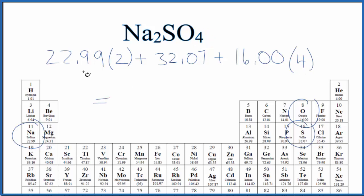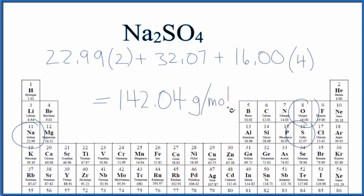When we multiply and add everything up, we end up with 142.04, and the units are grams per mole. What that means is if I have one mole of sodium sulfate, it's going to have a mass of 142.04 grams.